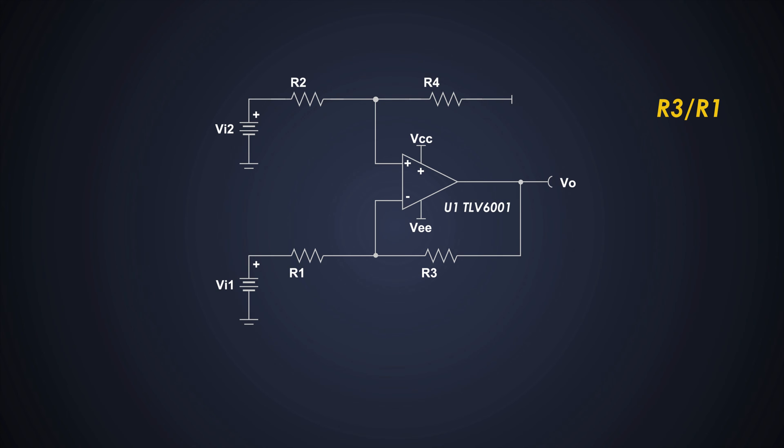As we saw, we have to select the input resistors considering the input source. Let's imagine the source impedance is between 60 to 100 ohms. So considering that, we will select the input resistors as 10K.